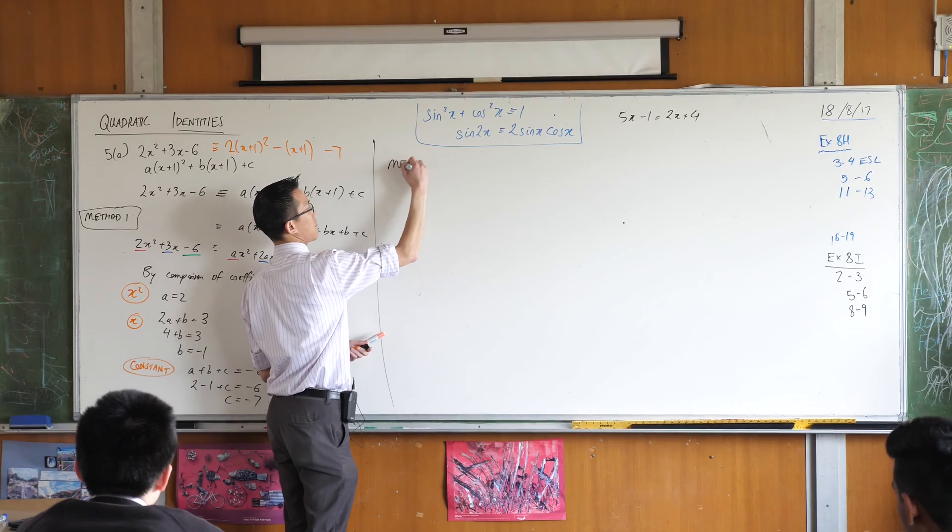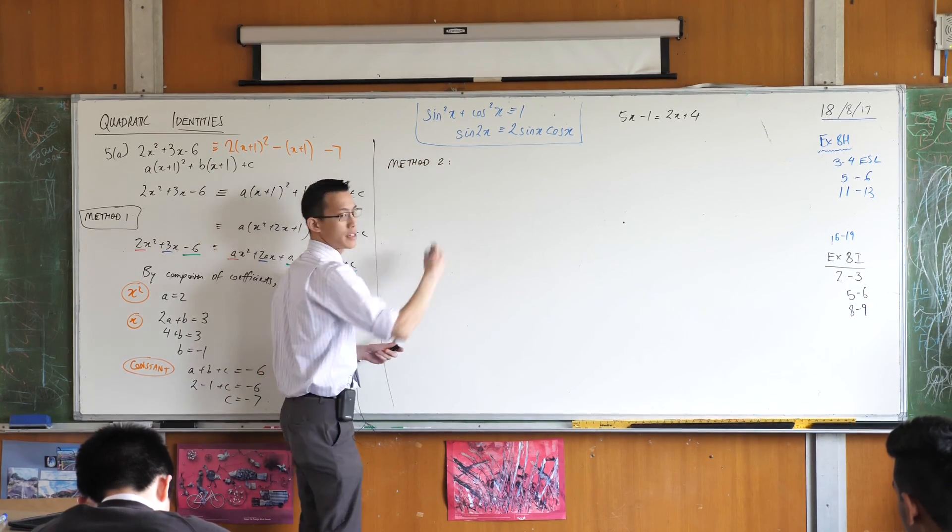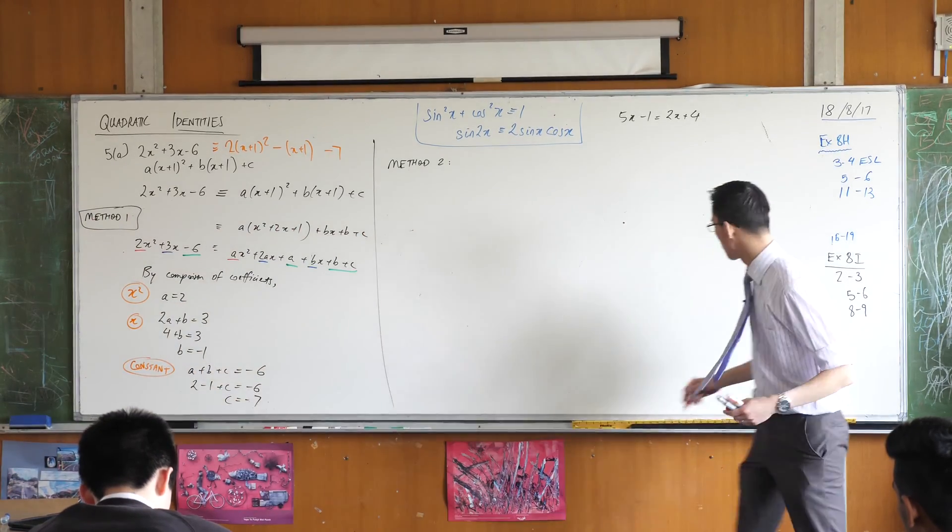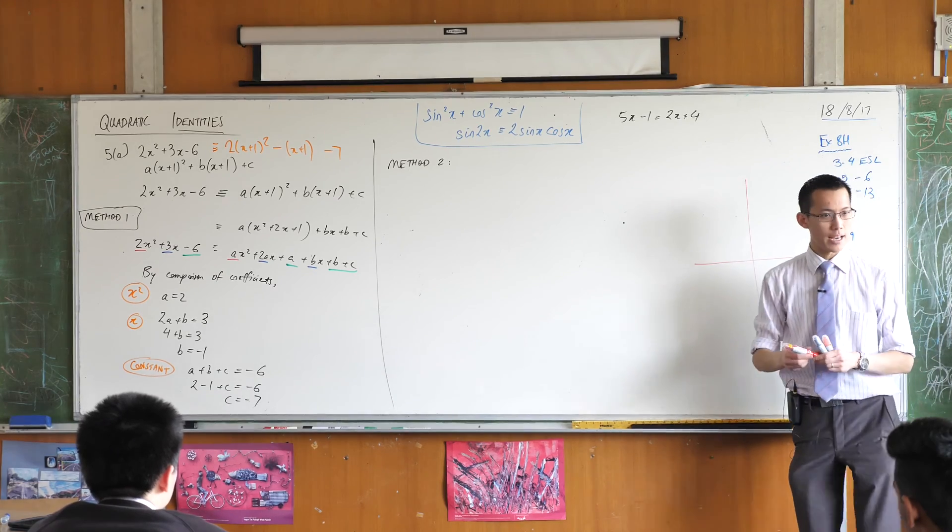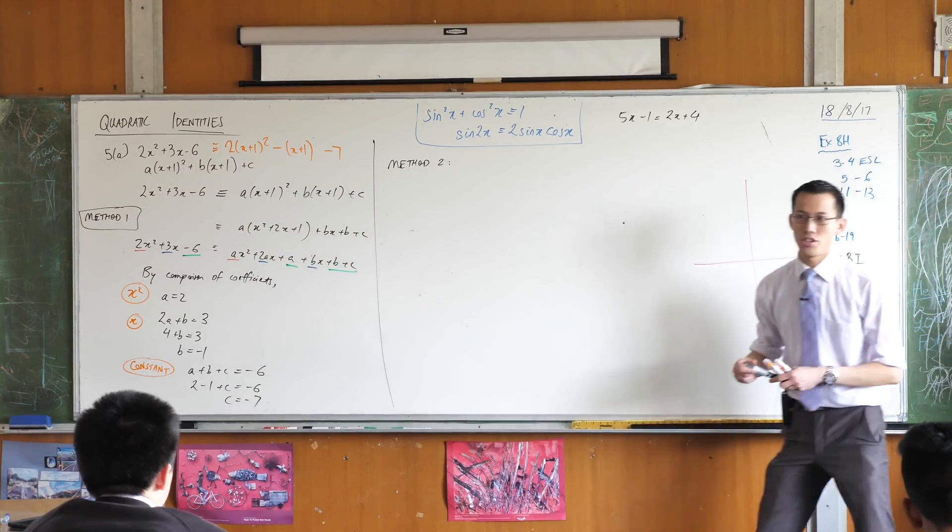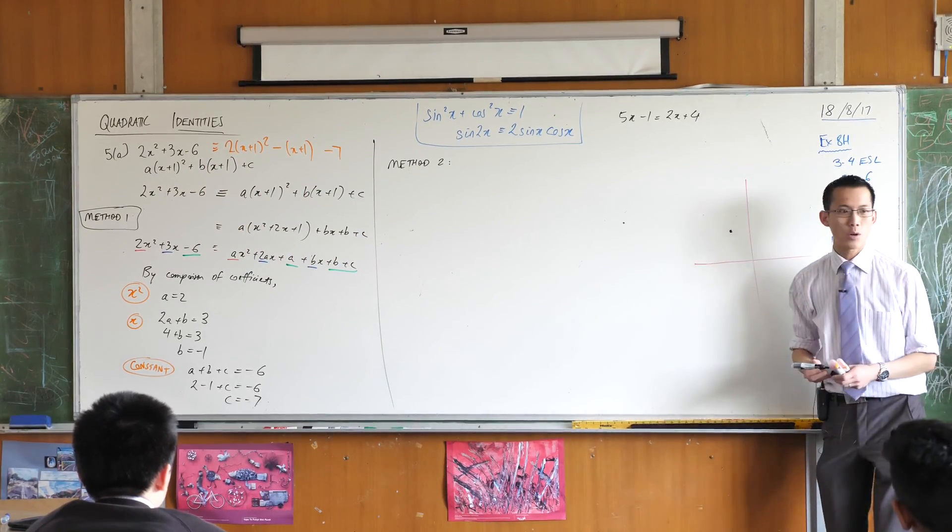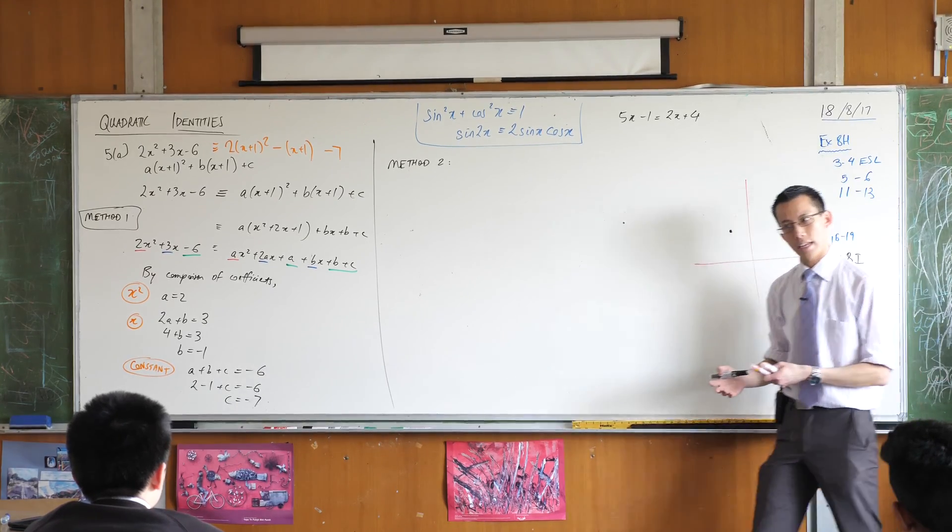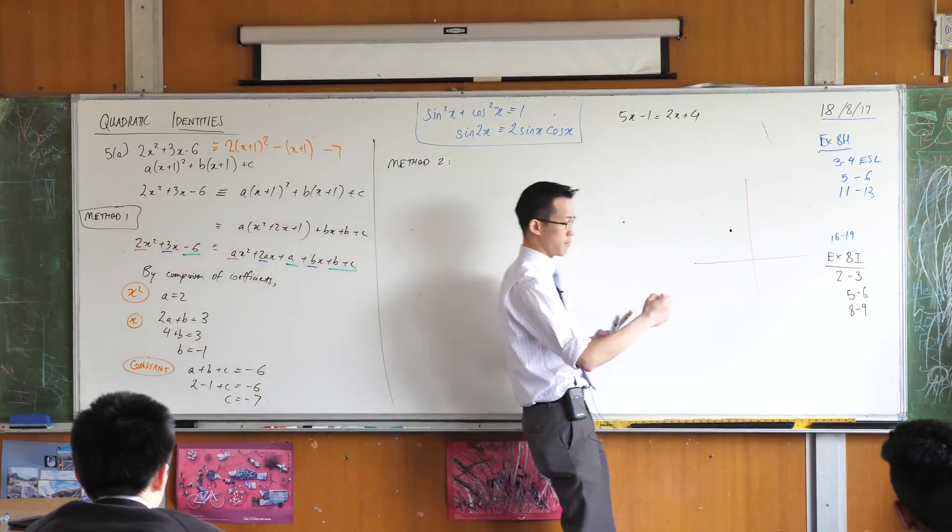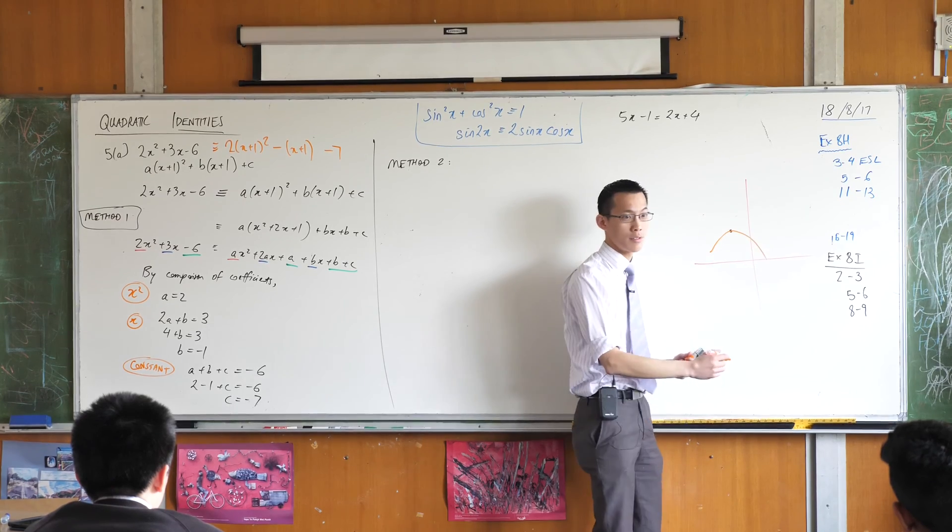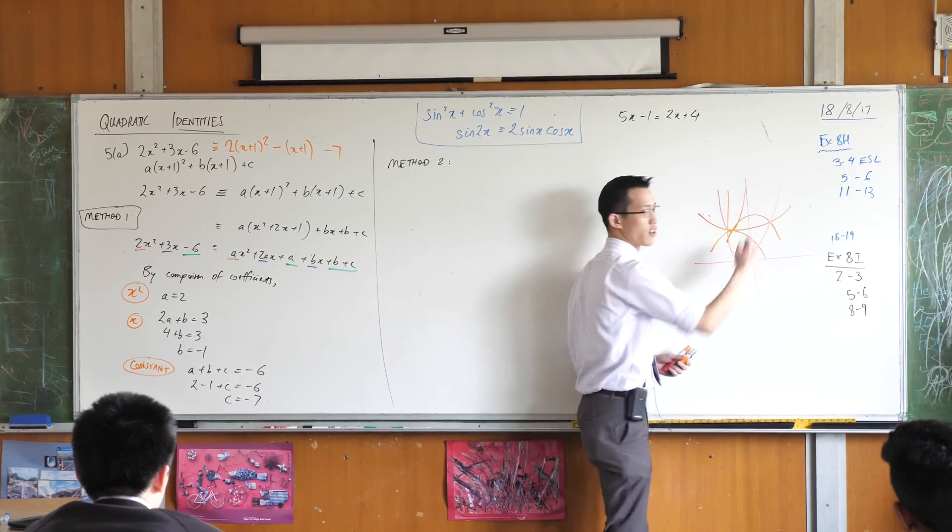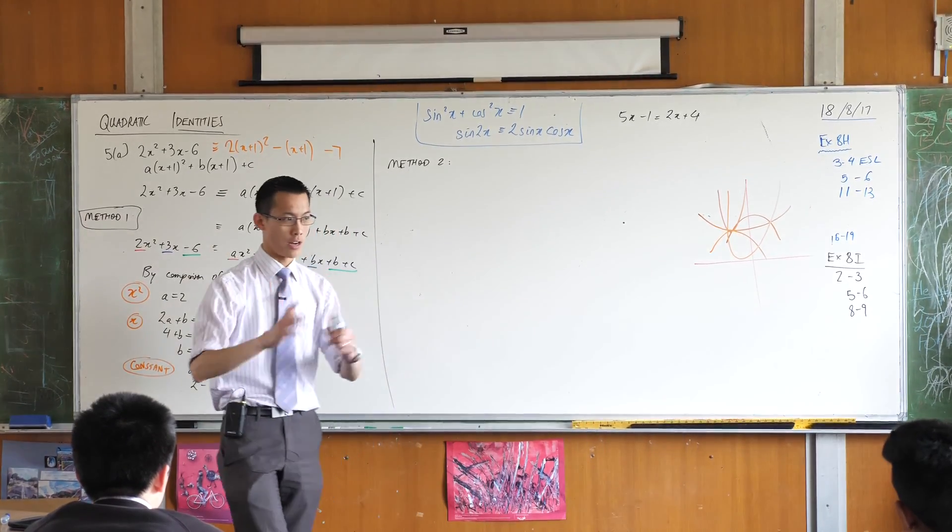So method two. I'm going to give this method a name in a second, but I want you to think about this for a second. We're dealing with quadratic functions. Now, if I'm telling you, I'd like you to come up with a quadratic function for me, it's not enough information to tell you, here's a point that that quadratic function goes through. Because clearly there's an infinite number of quadratics that go through that point. Do you agree?